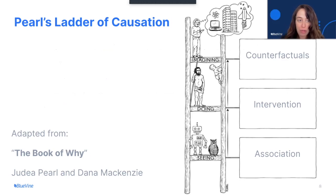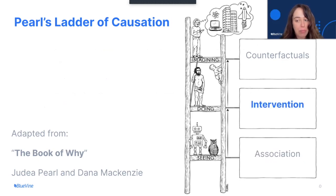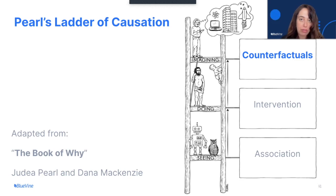An interesting concept from Pearl's book is the ladder of causation, in which the lowermost level is association — we saw that the rooster's crow and the sun rise at the same time. The next level is intervention, which answers questions such as, if we give patient A a drug X, how many months will they live longer? This is not something we'll go into in this talk. We'll discuss only counterfactuals.